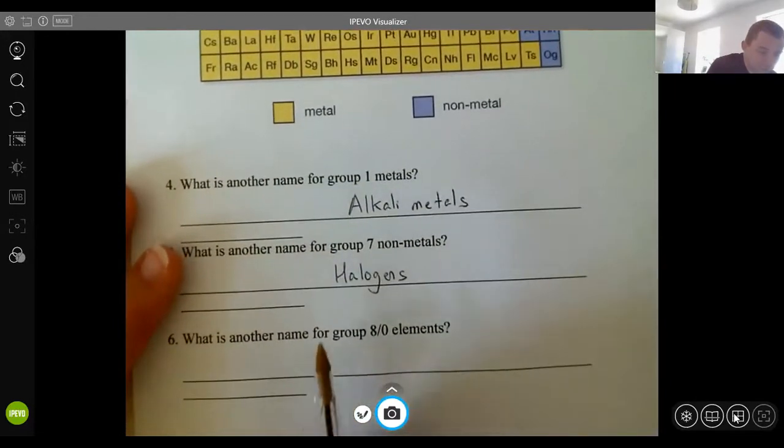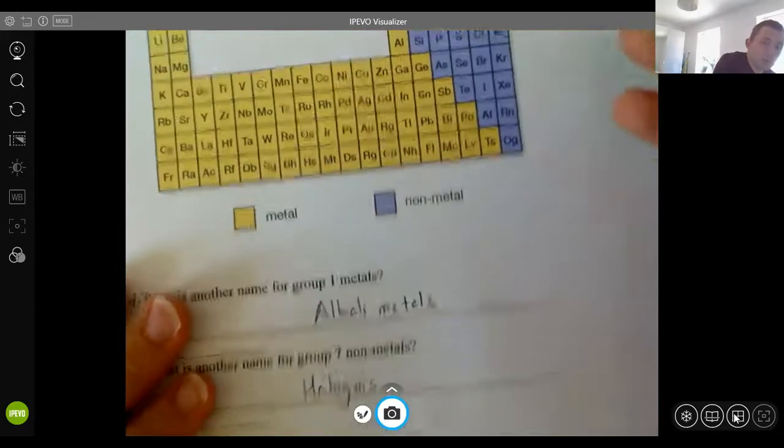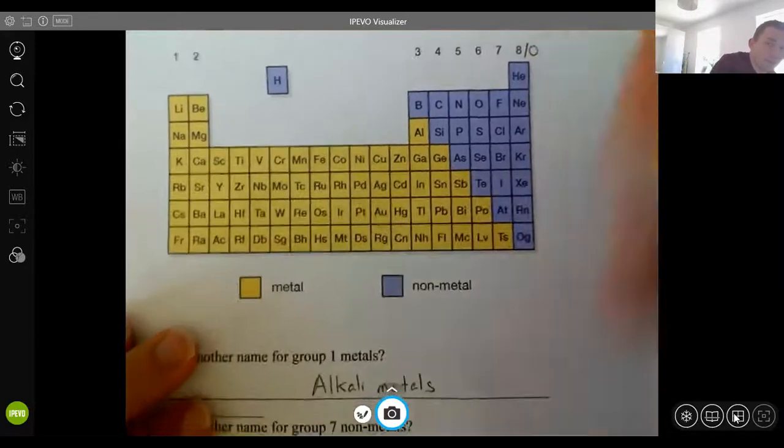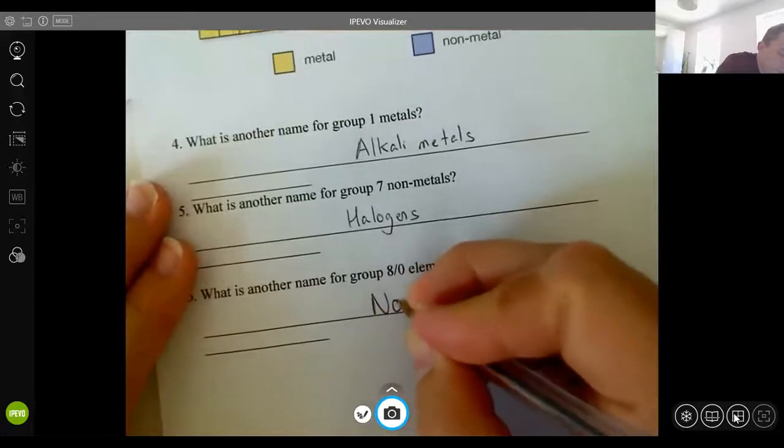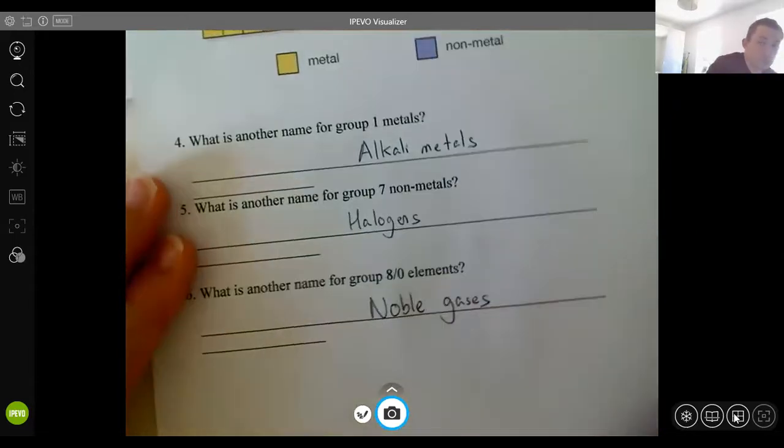And finally, what is another name for the group eight or zero elements? Now, I've done group eight or group zero, because on my table here it's group eight, but on the other one it's group zero. It doesn't matter, it's the same thing. They are what we call the noble gases. So they are all gases at room temperature.